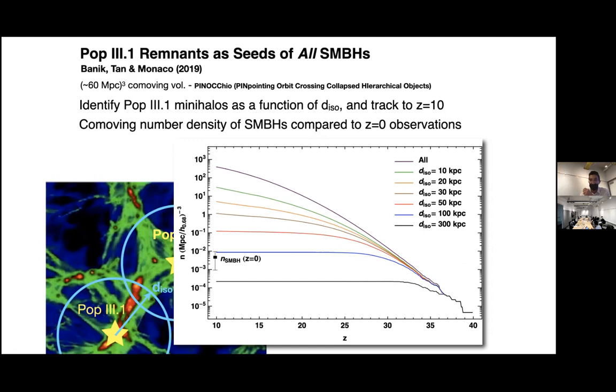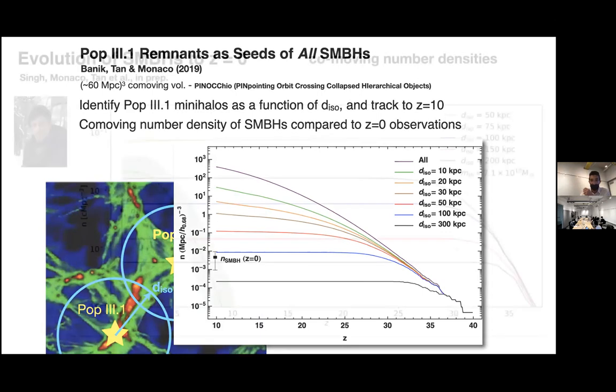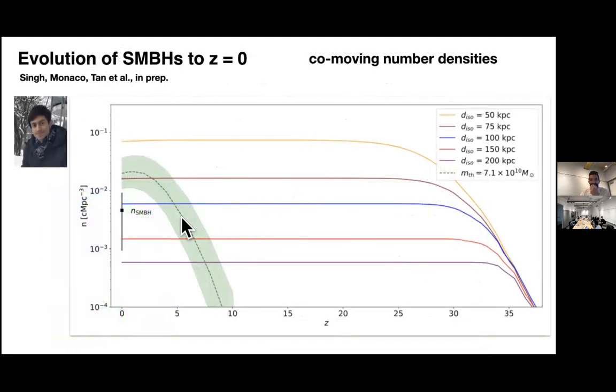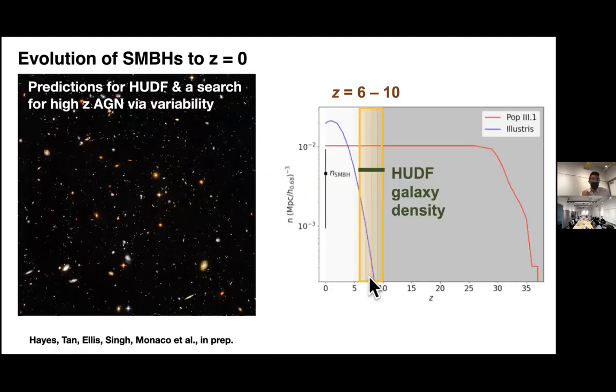But that's the model here. There are many other predictions we can come to. We've now followed to redshift zero. That's what Jasbir Singh is doing. He's in the Trieste-Chalmers PhD program. This shows down to redshift zero. This is what the mass threshold that's used in Illustris is - 7 times 10 to the 10. So in their model, black holes appear at much lower redshifts, for example.